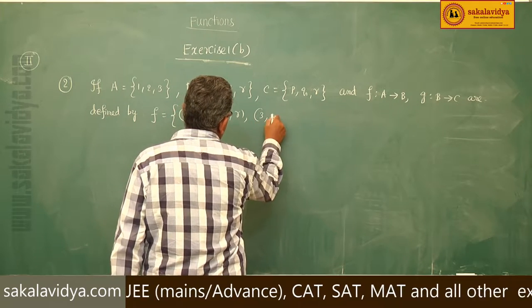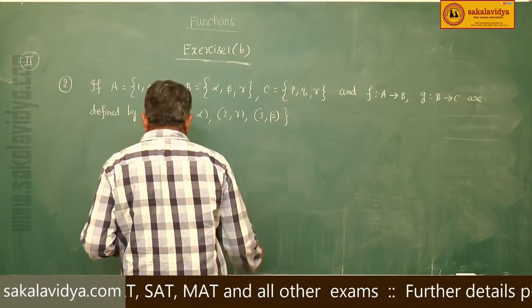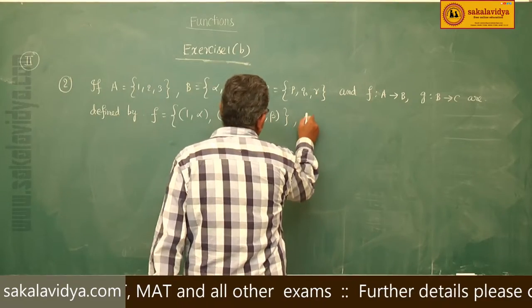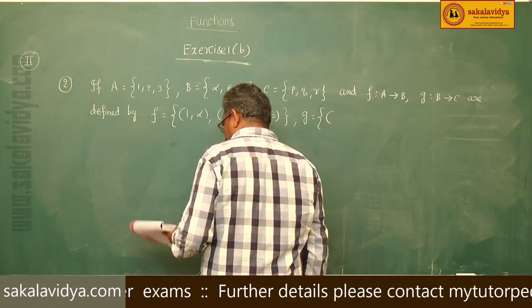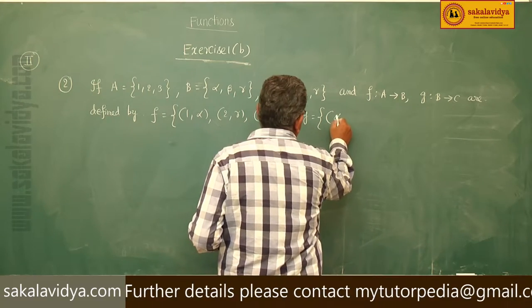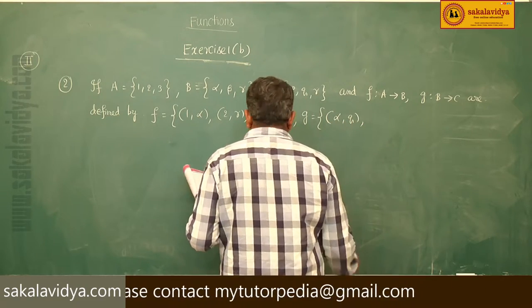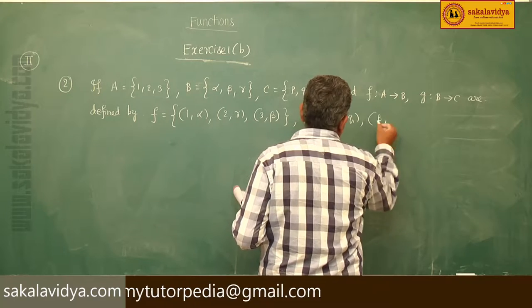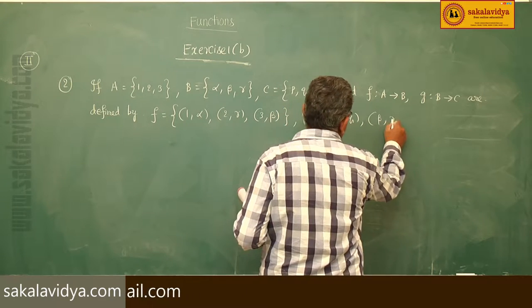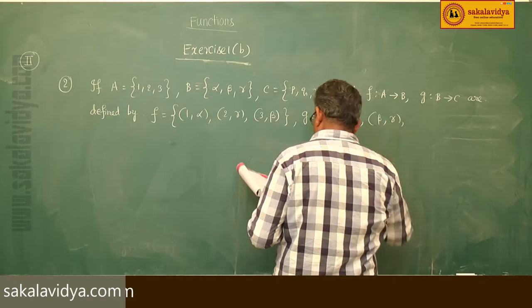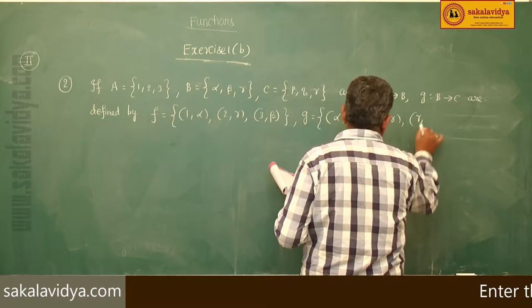G is equal to {(alpha, Q), (beta, R), (gamma, P)}.